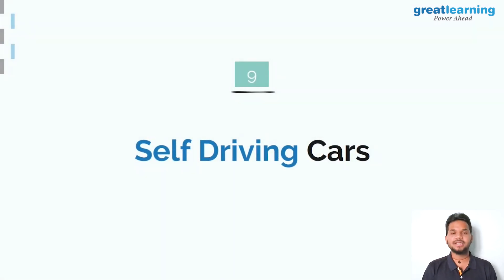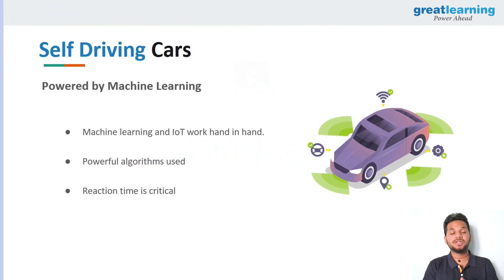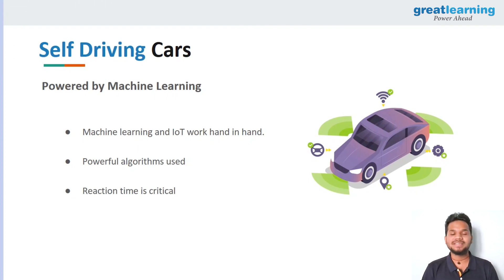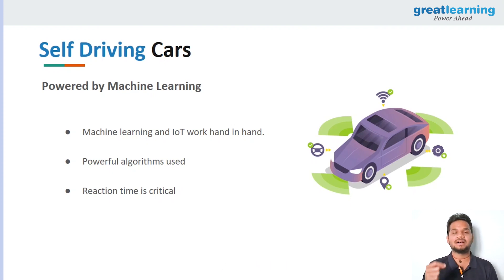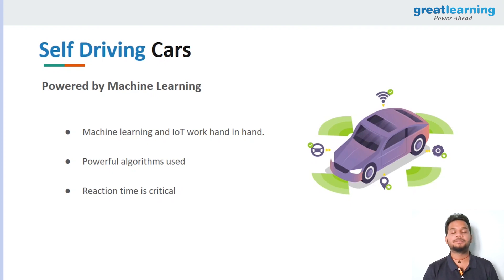At number nine we have self-driving cars. Self-driving cars were thought to be a thing of the future, but the future is now. Companies such as Tesla, Google, and others are working to provide commercial applications where users can have access to self-driving cars. The only thing stopping us from fully autonomous vehicles right now is the law requiring a driver to be present. Tesla's cars already have the Autopilot feature with the capability to drive people from one place to another.